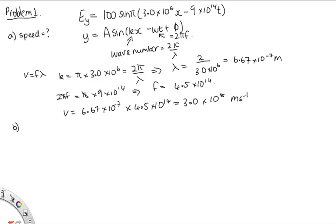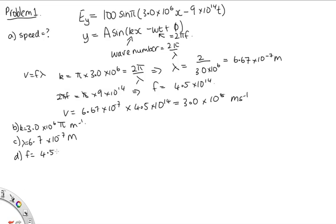Now part B, we need the wave number. That's k, which equals 3.0π × 10⁶ inverse meters. Part C asks for the wavelength, which we've calculated as 6.7 × 10⁻⁷ meters to two significant figures. Part D wants the frequency, which is 4.5 × 10¹⁴ hertz. Part E, the electric field amplitude — since it's an electric field, it has units of volts per meter, so the amplitude equals 100 volts per meter.